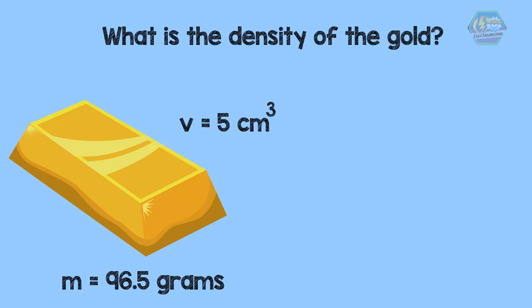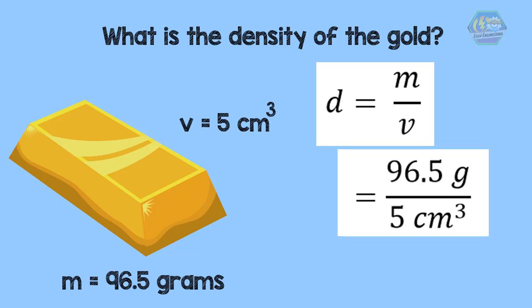Now do you still remember the formula of density? The formula of density is mass divided by volume. Now plug in the given values and the density will be 19.3 grams per cubic centimeter.